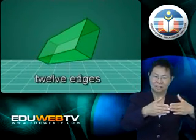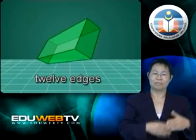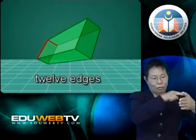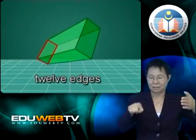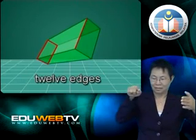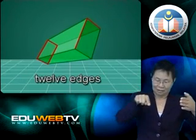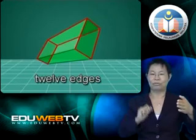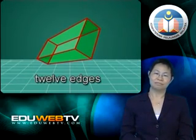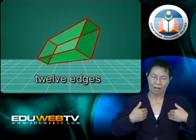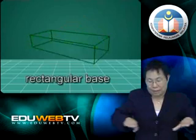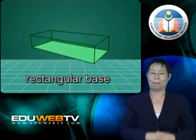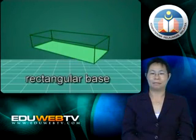And here is my edge. I have twelve edges: one, two, three, four, five, six, seven, eight, nine, ten, eleven, and twelve. I have only one base and it is rectangular in shape.